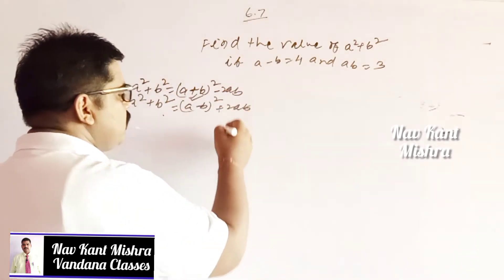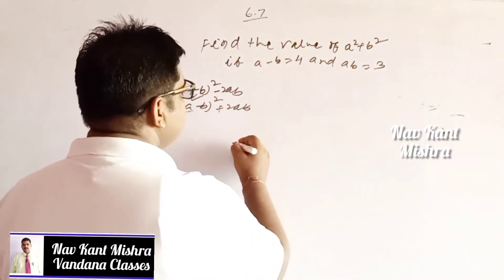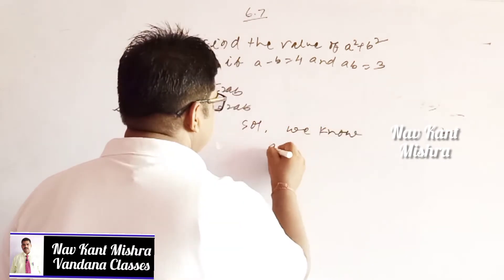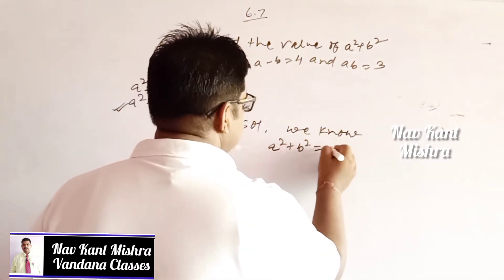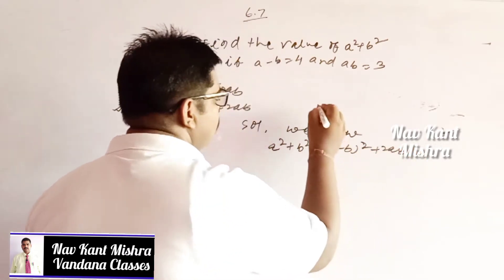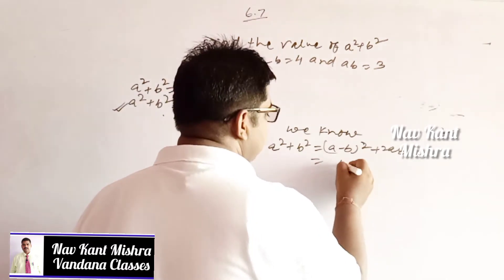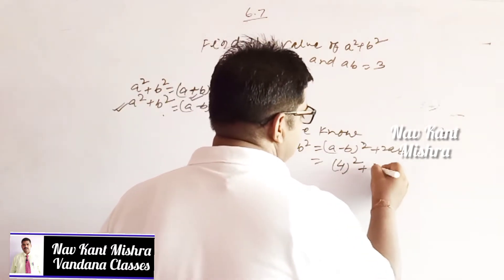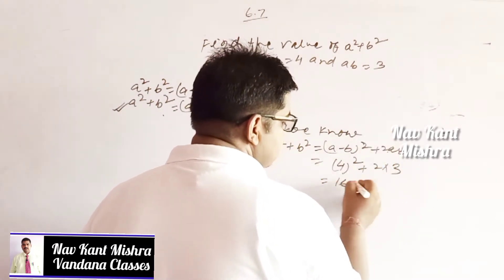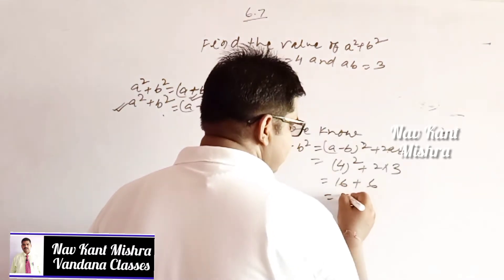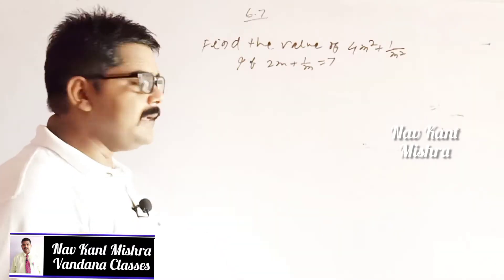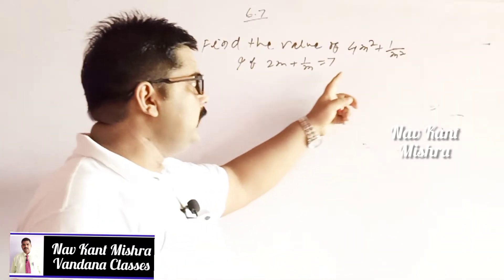So you have to apply this formula to solve the question. We know a square plus b square is equal to a minus b whole square plus 2ab. Put the value: a minus b is equal to 4, so 4 squared is 16, and 2 into ab which is given as 3, so 16 plus 6 equals 22. That is the result of this question.